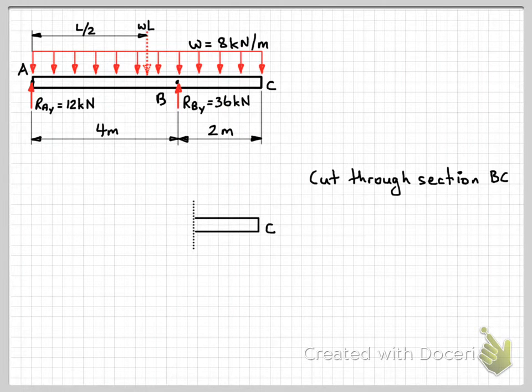So we're still taking the cut somewhere through section BC, but instead of drawing all of this side, the left-hand side here, I'm just going to draw the right-hand side of the beam on the right-hand side of the cut and use that to work out my internal actions.